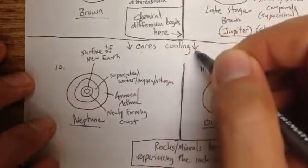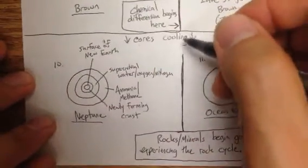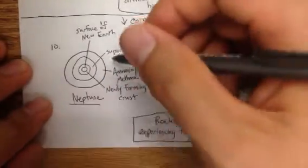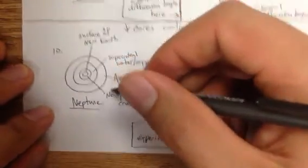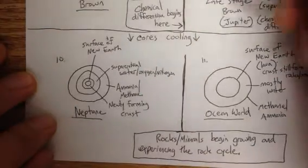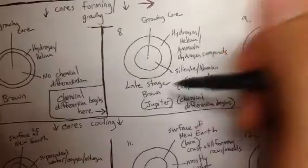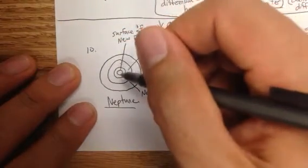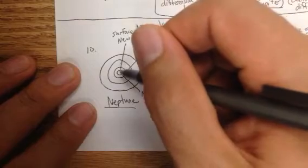Then you have the stages where the cores begin cooling, which means the star will be a lot colder on the outside. That's what we find in Neptune. They won't radiate as much anymore as the Jupiter stars did and the gray dwarfs did, so you have these apparent cool outer regions because the core is beginning to cool.